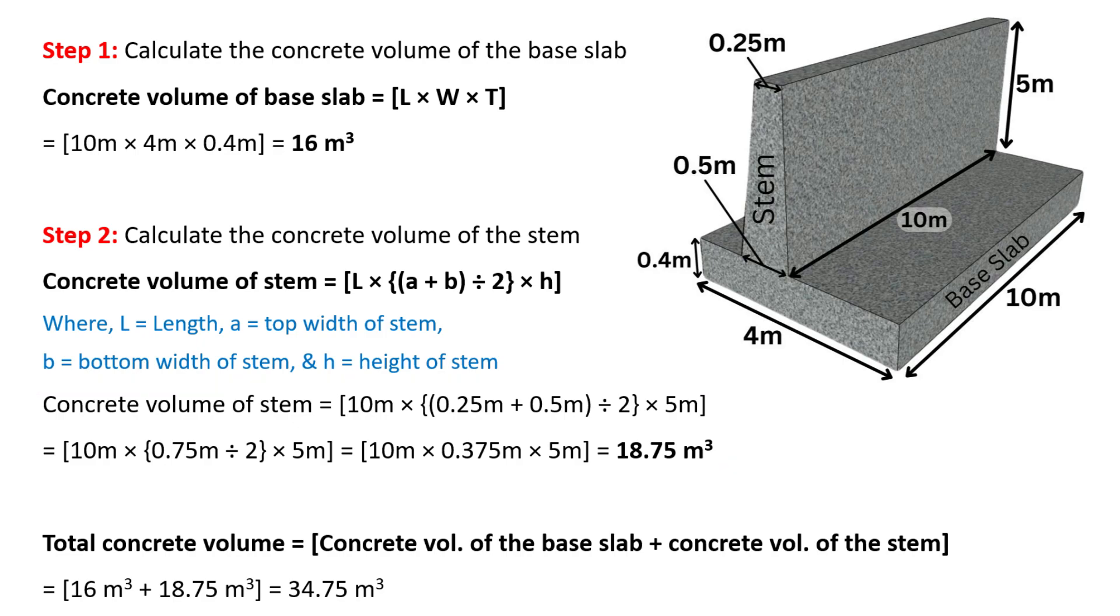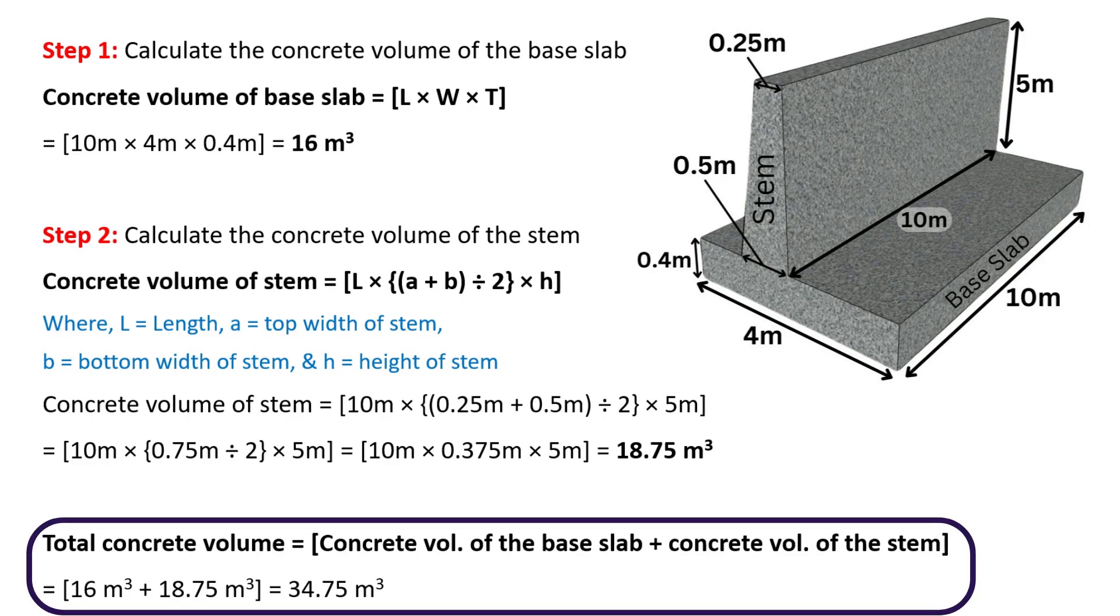The total concrete volume of the retaining wall is calculated by adding the concrete volume of base slab and the concrete volume of the stem. So, we have total concrete volume equal to concrete volume of base slab which is calculated as 16 cubic meters plus concrete volume of stem which is calculated as 18.75 cubic meters and the total will be 34.75 cubic meters.